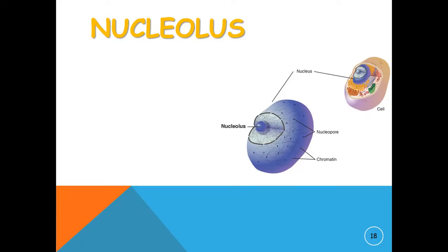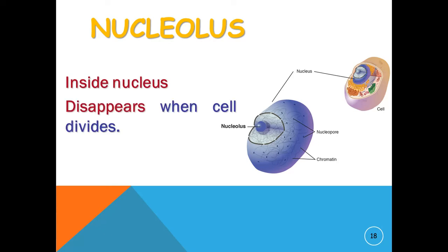The nucleolus is the distinct structure present in the nucleus of eukaryotic cells. Primarily, it participates in assembling the ribosomes, altering transfer RNA, and sensing cellular stress. The nucleolus is composed of RNA and proteins.